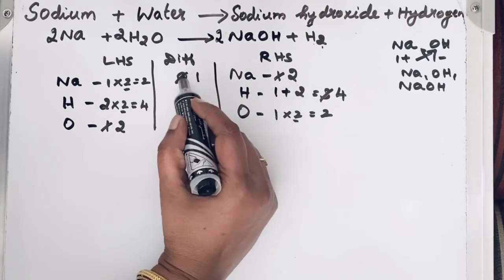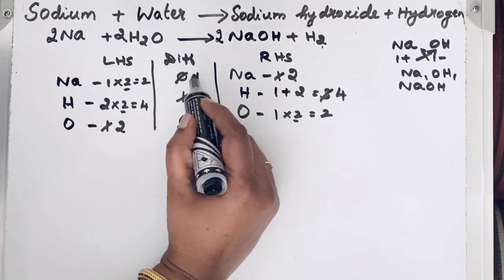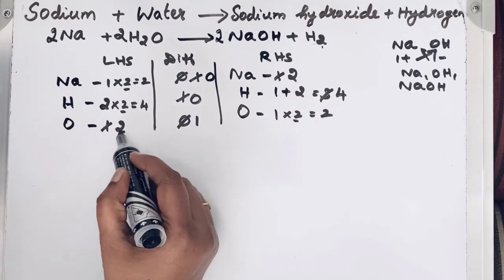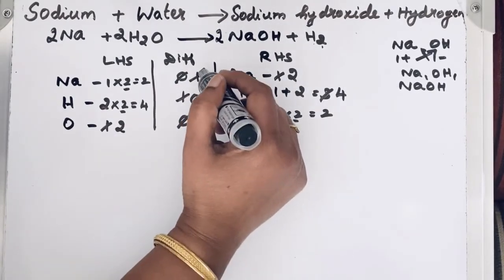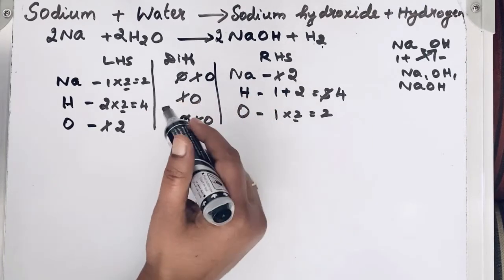So now see the difference, 2 minus 2, 0. Now for oxygen also, 2 minus 2, 0. So now we got 0 for all the elements in difference column.